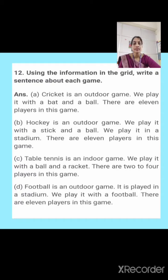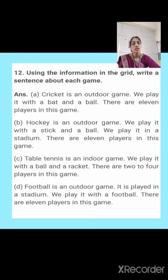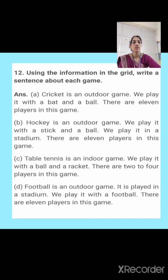Next is table tennis. Table tennis is an indoor game. We play it with a ball and racket. There are two to four players in this game. Table tennis is an indoor game — it is not played on a ground. Next is football. Football is an outdoor game. It is played in the ground — not a stadium. We play it with a football. There are eleven players in this game.